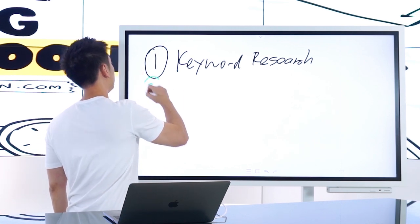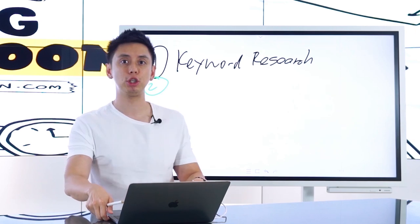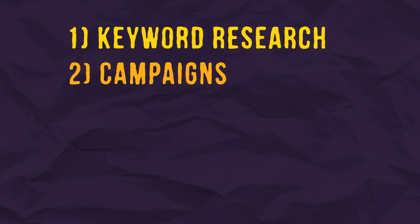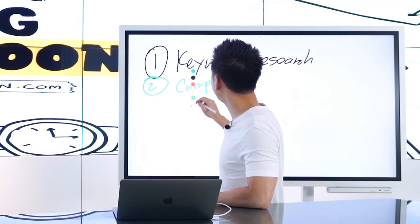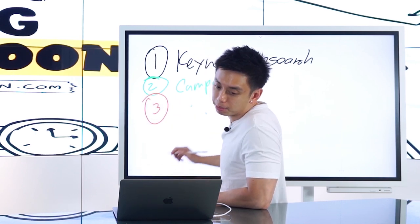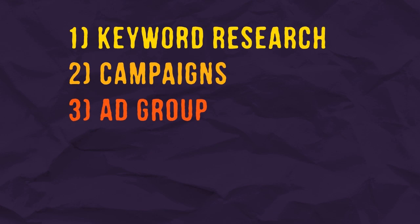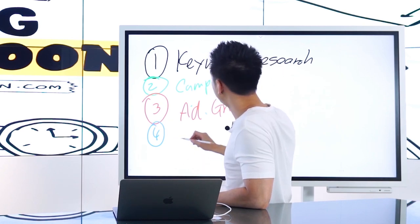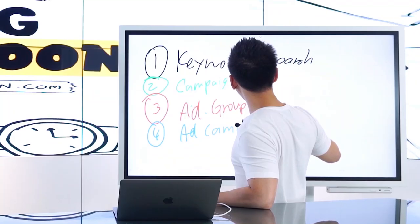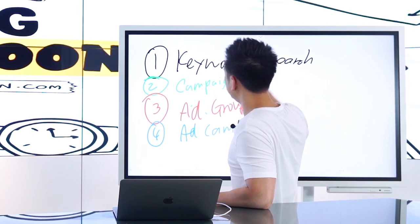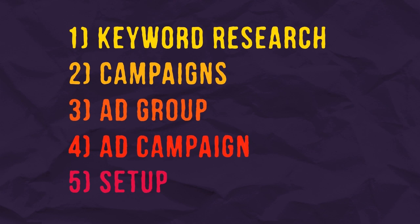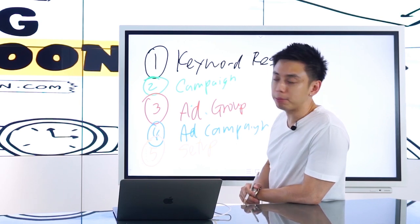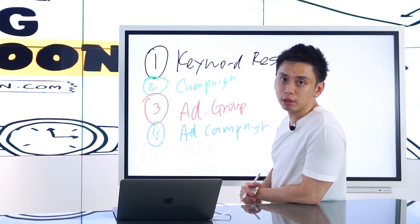Going deeper into that: number two, after we do our research, I'm going to show you how to set up different campaigns within Google Ads. Once we talk about campaigns, number three is the ad group — which ad group does it fall under? Number four, once we understand the ad group, we'll talk about the ad itself. And finally, number five, we're going to talk about the setup in AdWords, scaling, and advanced stuff. This is the five-step process for starting a Google ad campaign.